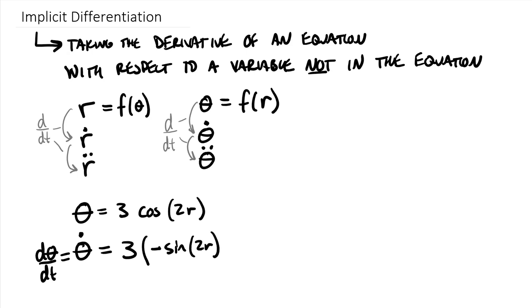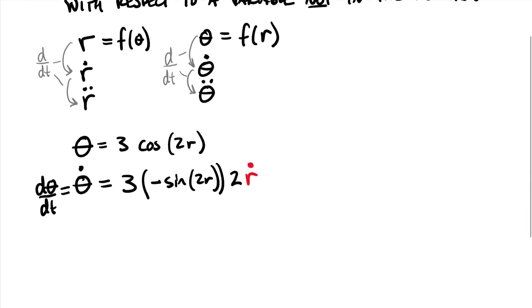The derivative of cosine of 2r gives you negative sine of 2r. Now you should remember from the chain rule you also need to take the derivative of the inside of this function, which would give you a two. But the implicit differentiation piece says it's not only going to be a two, but this is also going to have included here, and I'll put it in red, an r dot. Because it's not just the dr derivative of 2r, it's the dt derivative of 2r. So two is going to be a constant, then r dot is dr/dt.